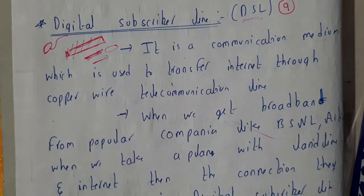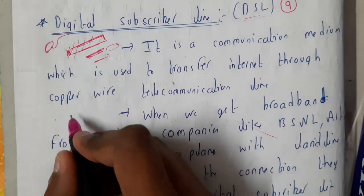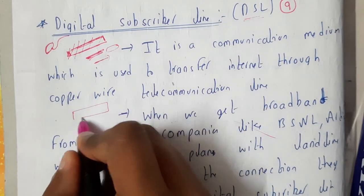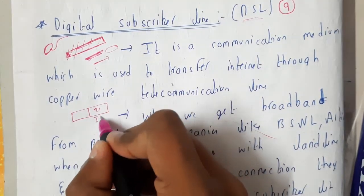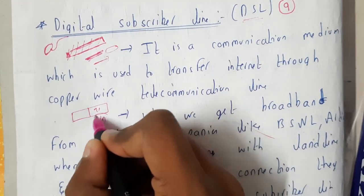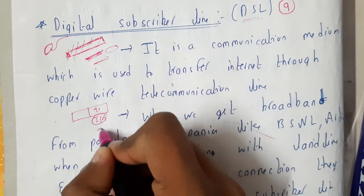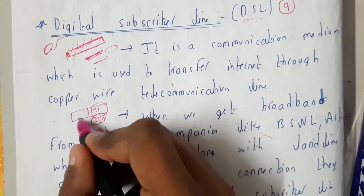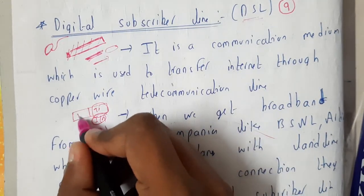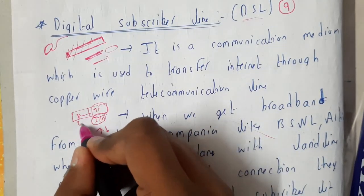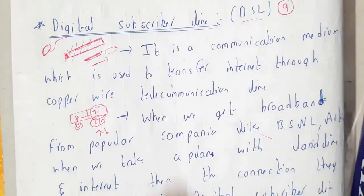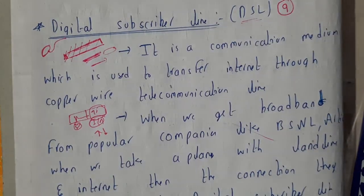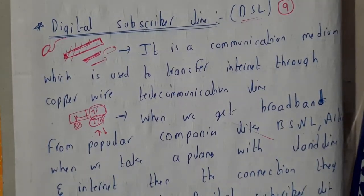In DSL, if the wire capacity is 100%, then 70% will be given for internet — for uploading and downloading — and your phone line will use the remaining 30%. Now let us go through the description of this so that we'll have a clear idea.